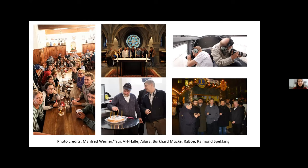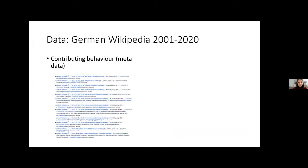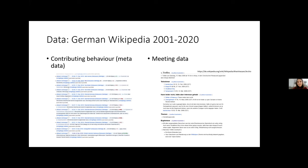Those informal meetups can come in all shapes and sizes: from drinking a beer together in a pub, going on hiking trips, organized barbecues, or more work-related open editing events. These offline meetups are what I'm interested in — specifically how offline meetups influence online contributing behavior, i.e., editing on Wikipedia. To answer this question I look at the German Wikipedia from 2001 up to 2020. On one hand I have contributing behavior from data dumps — metadata showing who edited what and when. On the other hand, meeting data is available because meetings are organized on the platform itself.